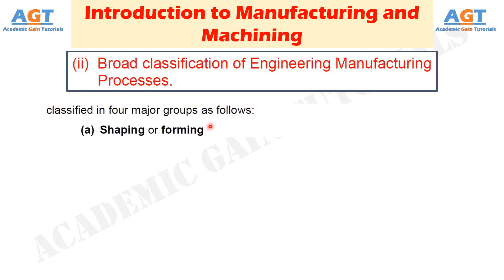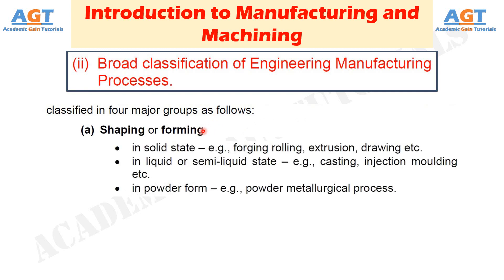Number 1: Shaping or Forming Processes — manufacturing a solid product of definite size and shape from a given material taken in three possible states. In solid state, for example, forging, rolling, extrusion, drawing, etc. In liquid or semi-liquid state, for example, casting, injection molding, etc. In powder form, for example, powder metallurgical process.